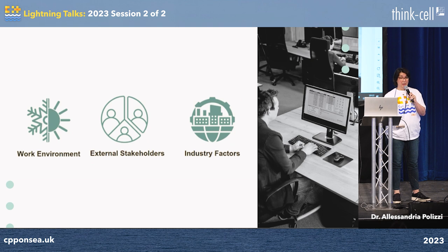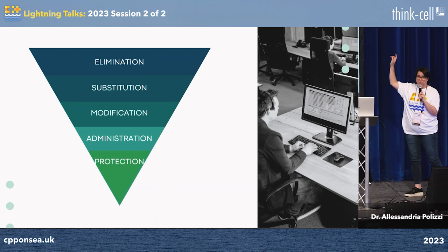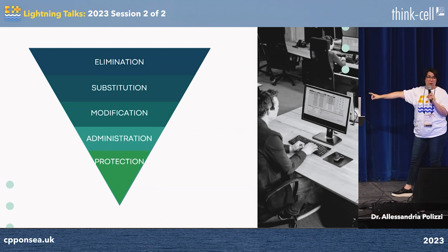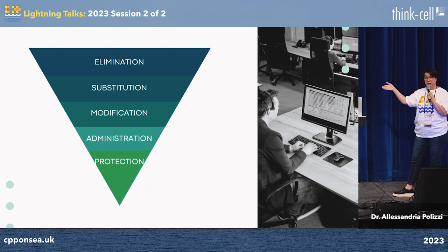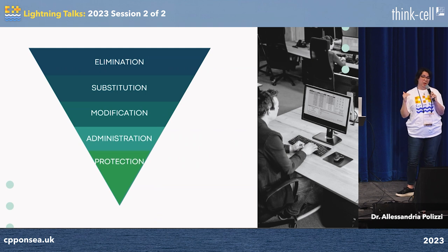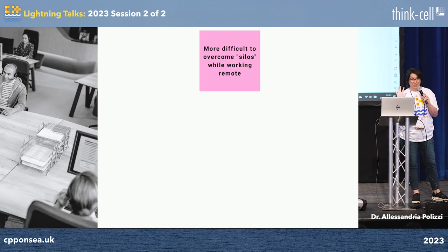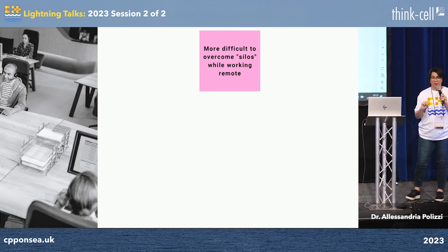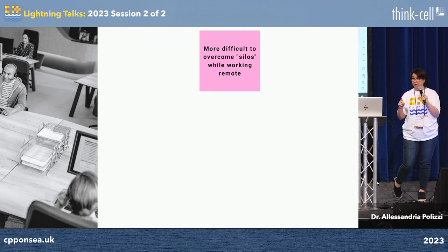We looked at these three categories, pulled up a mural board, and I taught the team this hierarchy of controls. We apply this the same way you do any safety risk — the first thing I would like to do is eliminate it. But many of the things, especially in that middle bucket, we can't eliminate. So we look at how we can alter how we work in order to decrease the risk of psychological injury to our mental health.